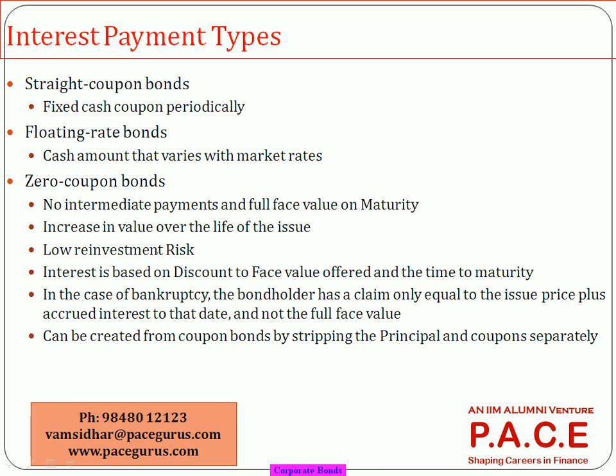Some key characteristics associated with a bond: one major characteristic is the coupon, which is a regular periodic payment. Instead of paying everything at maturity, periodic payments are made. It could be a fixed rate coupon, a floating rate coupon, or a zero coupon. In the case of zero coupon bonds, there are no intermediate payments — everything is paid at face value on maturity — so they are always issued at a discount to face value.